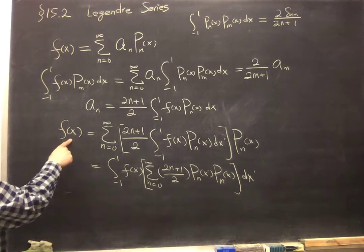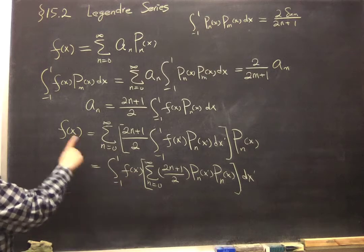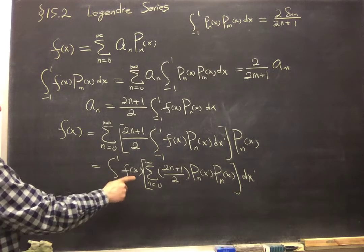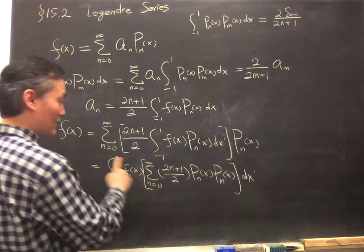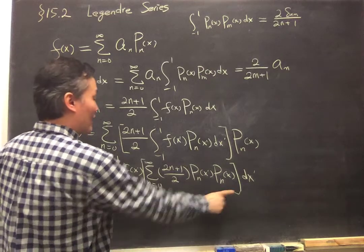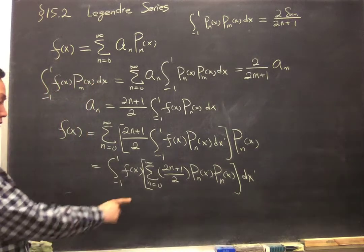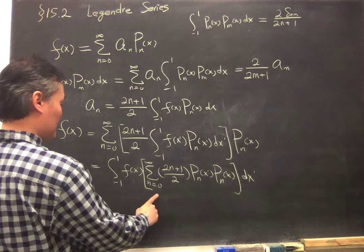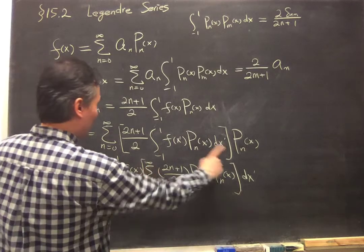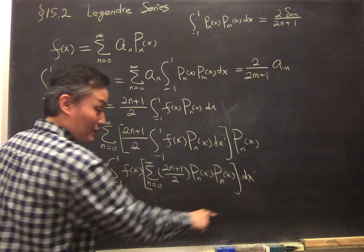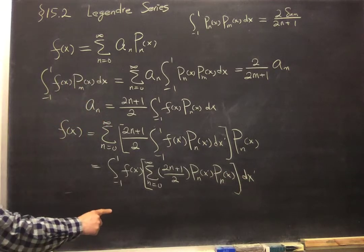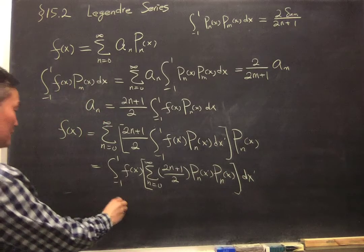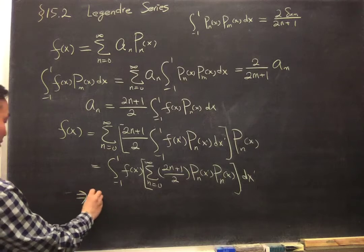So compare this with this one, so this is equal to integrating the same function over this range, multiplied by this factor. So it's pretty obvious that this factor, this square bracket, must be equal to a delta function.